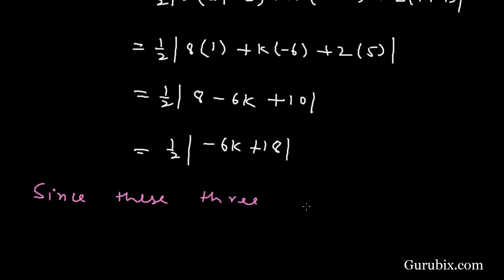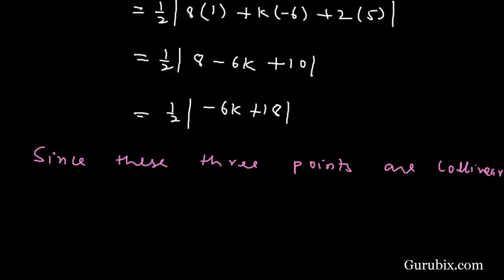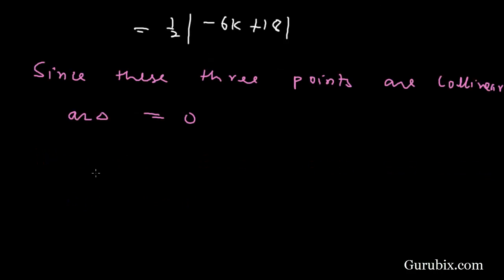Since these three points are collinear, the area of triangle will be equal to 0. This means 1/2 |-6k + 18| = 0.